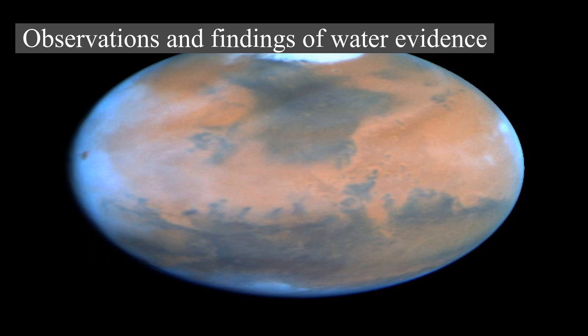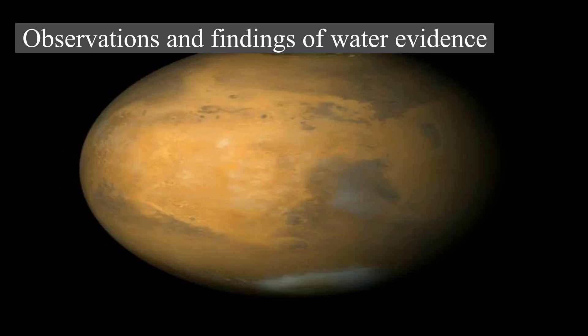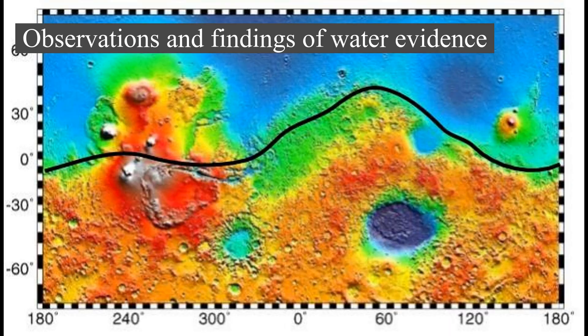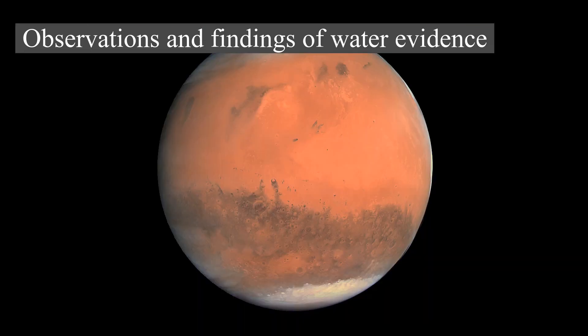In September 2015, NASA announced strong evidence of hydrated brine flows in recurring slope lineae, based on spectrometer readings of darkened areas of slopes. These streaks flowed downhill in Martian summer when the temperature is above -23°C, and freeze at lower temperatures. However, later work suggested that the lineae may be dry granular flows instead, with at most a limited role for water. A definitive conclusion about the presence, extent, and role of liquid water on the Martian surface remains elusive.